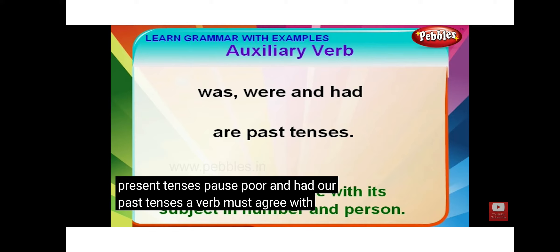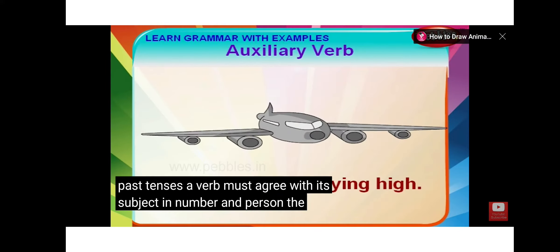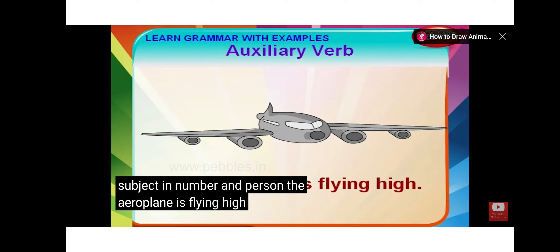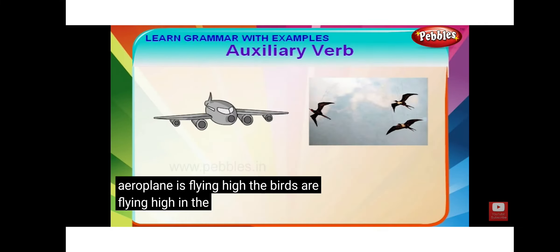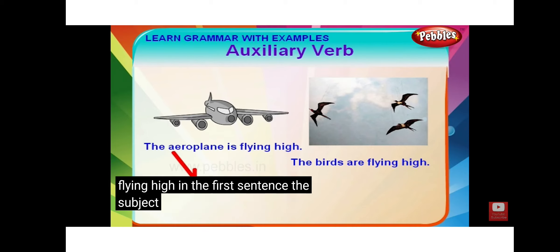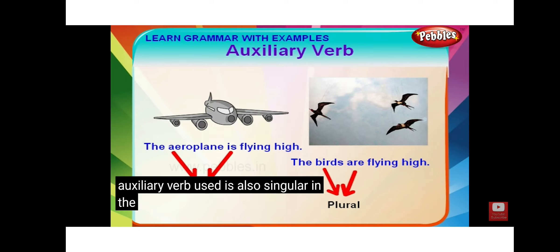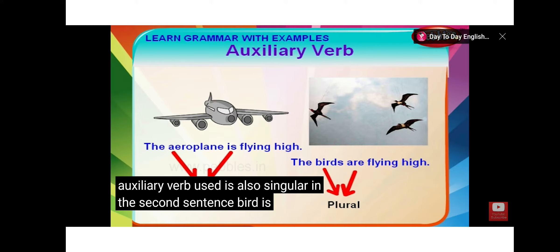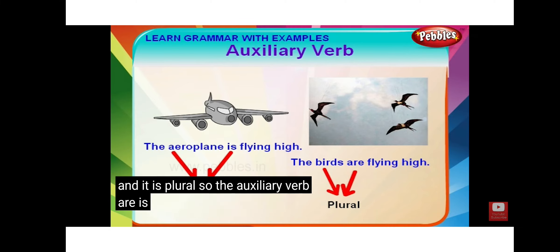A verb must agree with its subject in number and person. The aeroplane is flying high. The birds are flying high. In the first sentence, the subject 'aeroplane' is singular, so the auxiliary verb used is also singular. In the second sentence, 'birds' is the subject and it is plural, so the auxiliary verb 'are' is used.